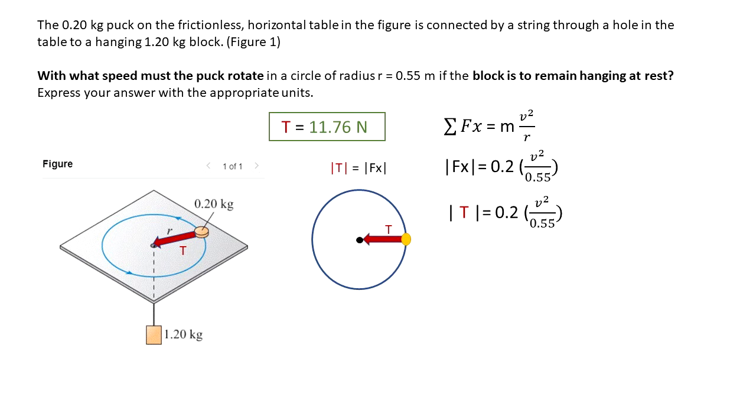And the force, the centripetal force, we know that is the tension. So I'm going to plug in for tension that magnitude of the force, 11.76. And that's equal to 0.2 times v squared over the given radius.